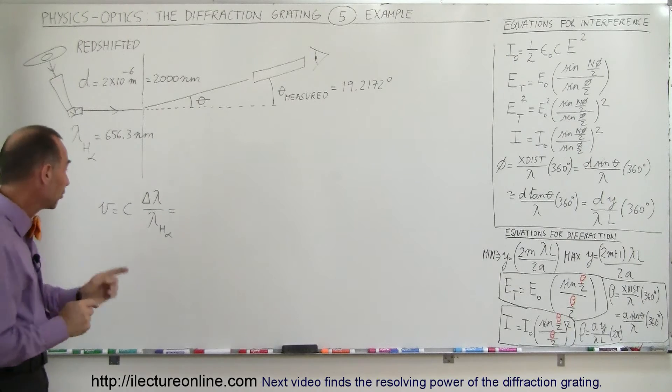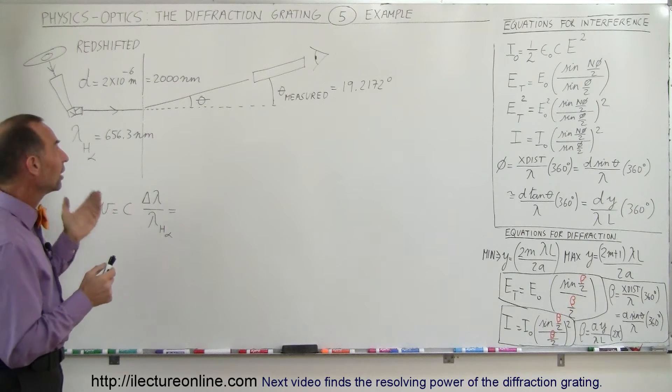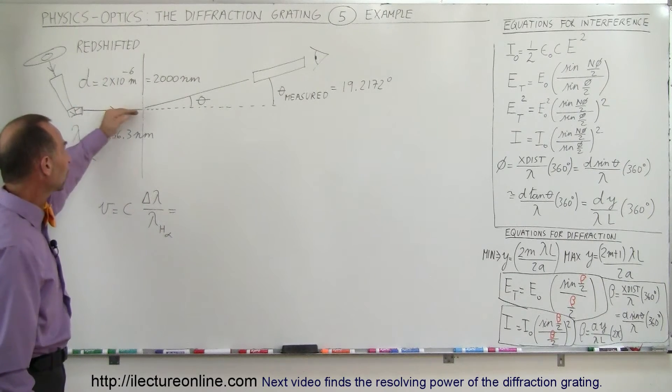Once we know how much that shift is, we'll be able to calculate the velocity of that galaxy. I'll show you how to do that. But first of all, let's say that the light goes to the diffraction grating.